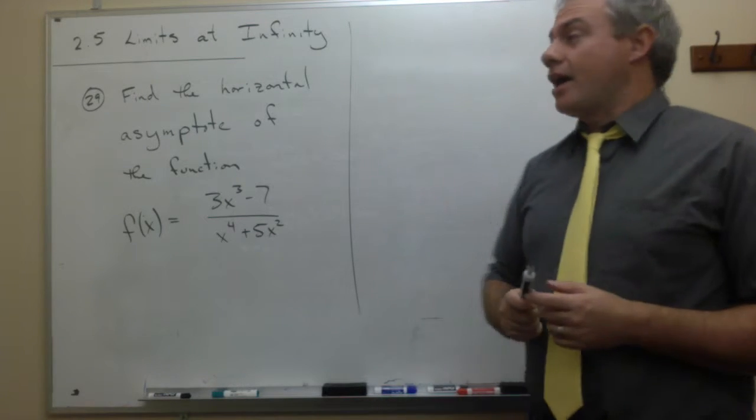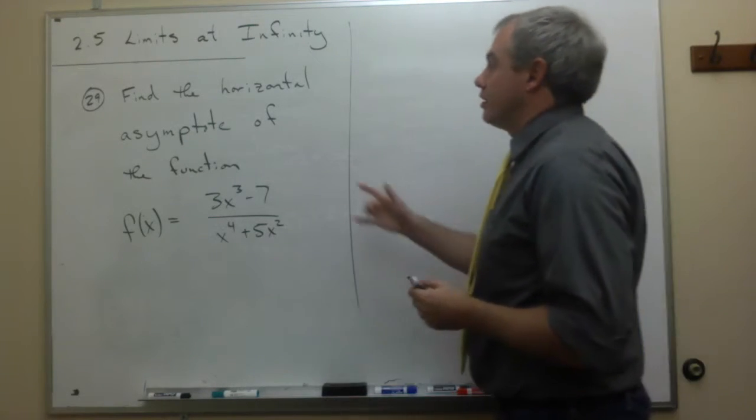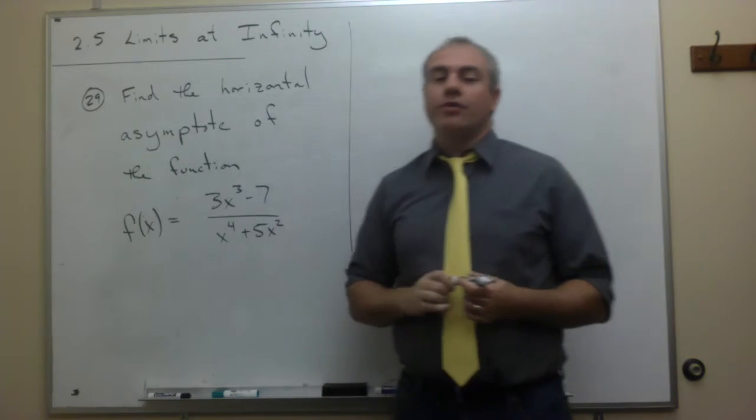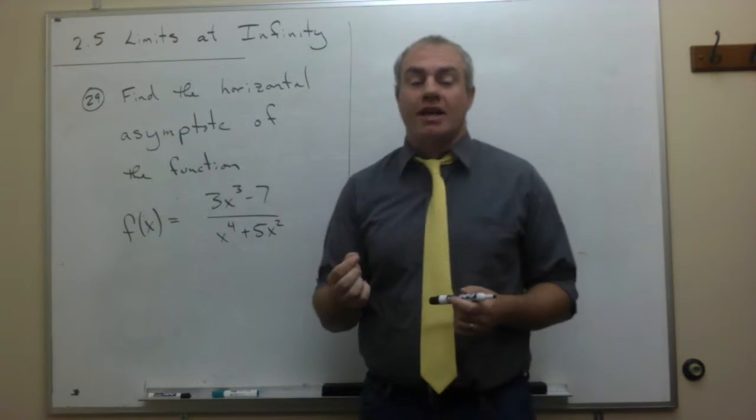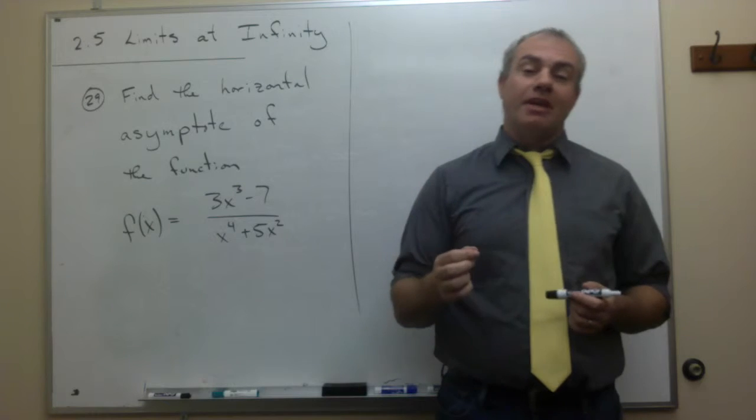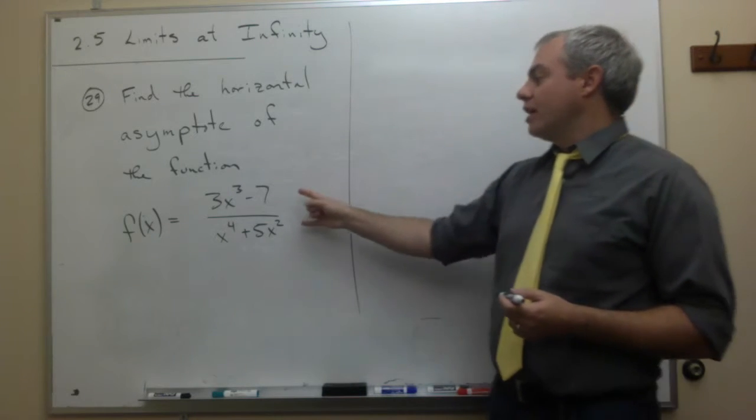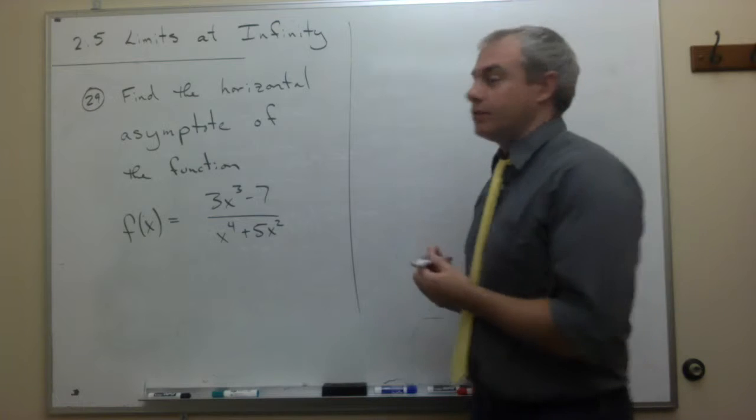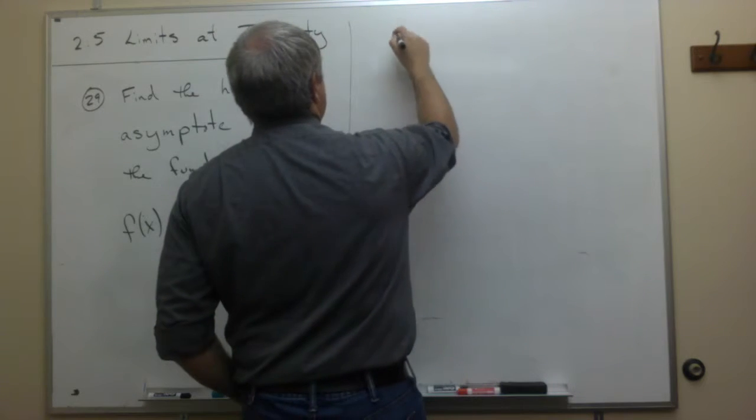So how do we want to find this horizontal asymptote? We know that the way we find horizontal asymptotes is we take the limit as x goes to infinity of the rational function. So let's do it. I'll write this down.